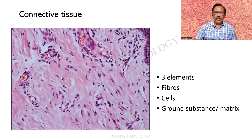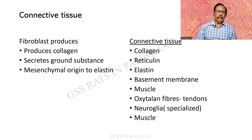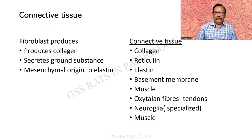It is always better that we know the basics — the components we are going to study. The fibroblast produces collagen; in a way it can be a precursor of collagen. It also secretes the ground substance and it yields a mesenchymal origin to elastin, which is another substance we shall be dealing with.